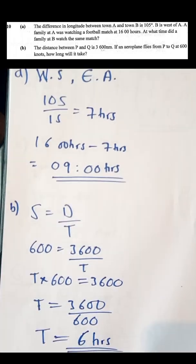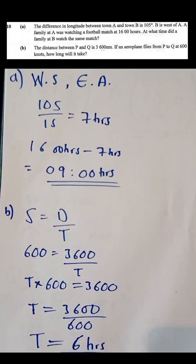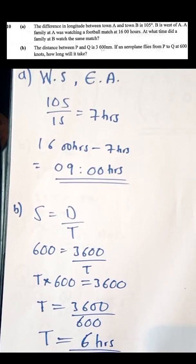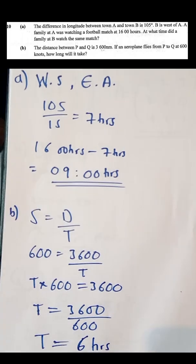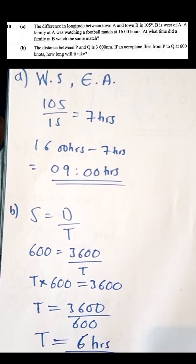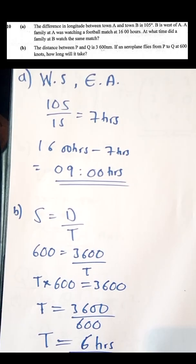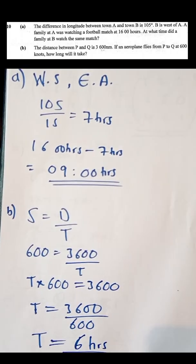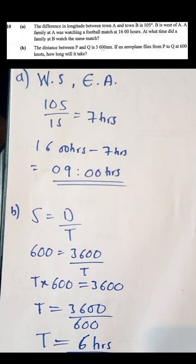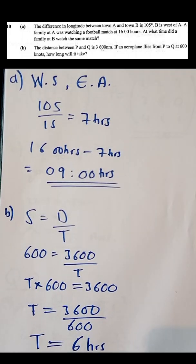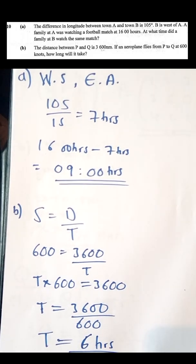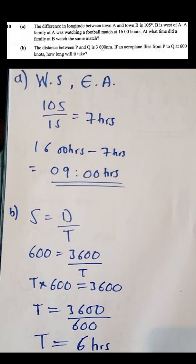Question 10B is still under F-geometry. The distance between P and Q is 3,600 nautical miles. If an aeroplane flies from P to Q at 600 knots, how long will it take? 'How long' refers to time.